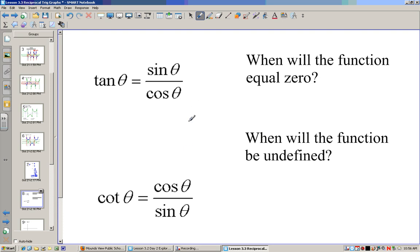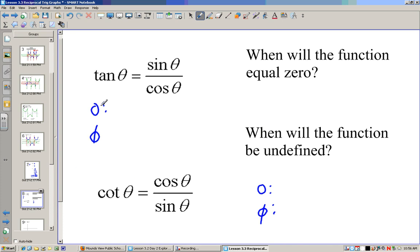So we need to figure out when these functions will equal zero and when they will be undefined. So let's look at that for both of these. Now a function is zero if their numerator equals zero. And it's undefined if the denominator equals zero. So tangent is zero when sine is zero. But cotangent would be undefined when sine is zero.